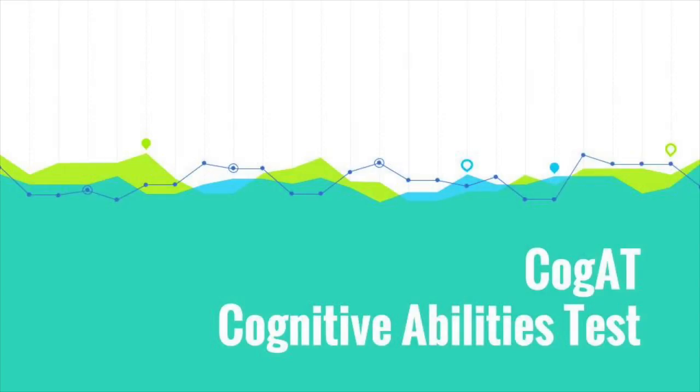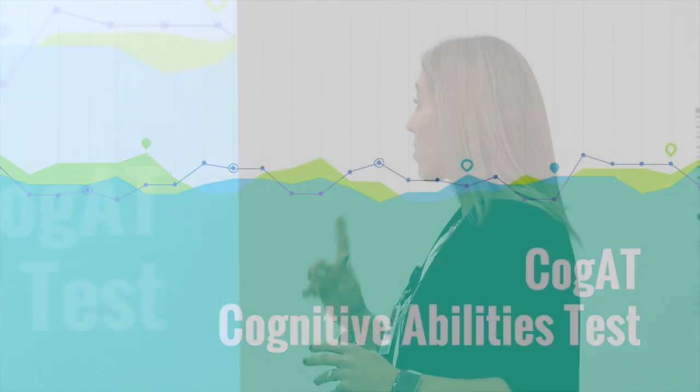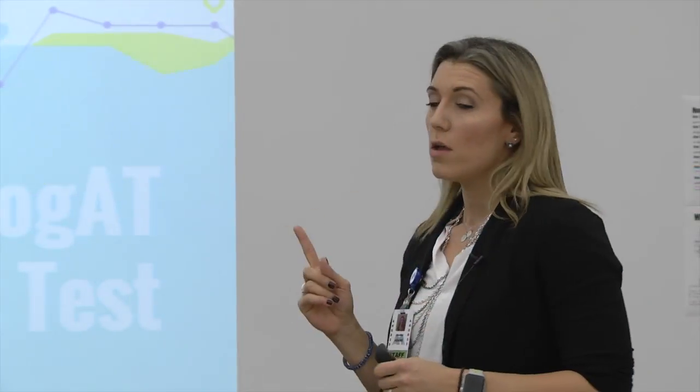Okay, we're going to get started. I'm Jen Adams, the assessment coordinator here at district office, and we're going to run through the COGAT — cognitive abilities test — just the basics about what it is, the different batteries within it, and then we're going to talk about scoring and the process that we go through for that as well.